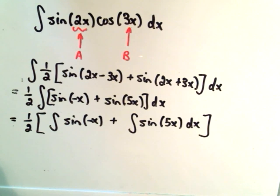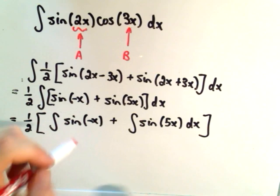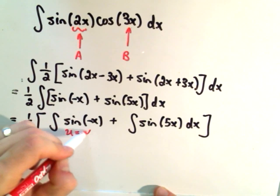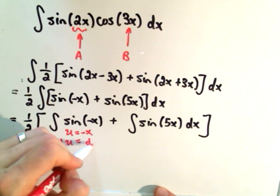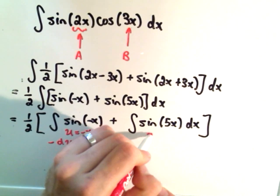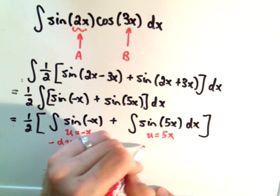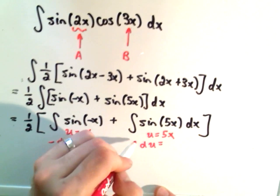I guess it never hurts to go all the way through it. So in this one, we could let u equal negative x, du would be negative 1 dx, so we'll pull the negative over. Here, let u equal 5x, du would be 5 dx.